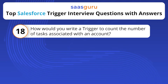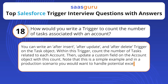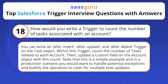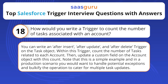How would you write a trigger to count the number of tasks associated with an account? You can write an after insert, after update, and after delete trigger on the task object. Within this trigger, count the number of tasks related to each account, then update a custom field on the account object with this count. Note that in a production scenario you would want to handle potential exceptions and bulkify the operation to cater for multiple task updates.